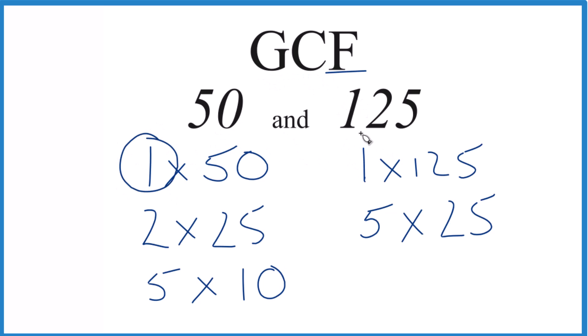1 goes into 50 and 125 evenly. Common factor. 2, no. 5, that goes into 50 and 125, but the greatest one is 25.